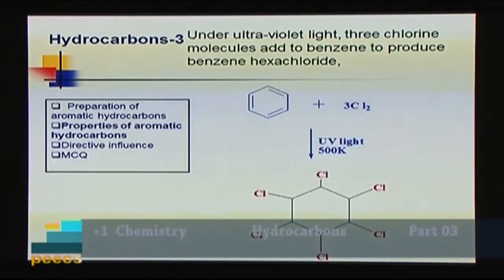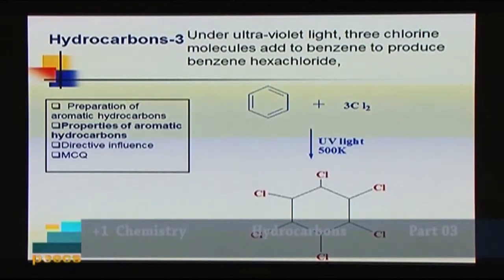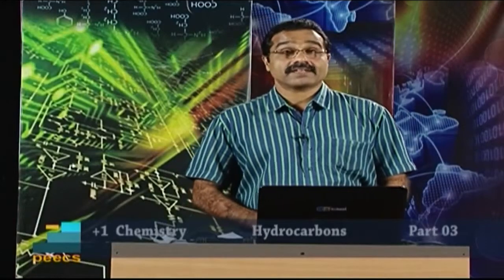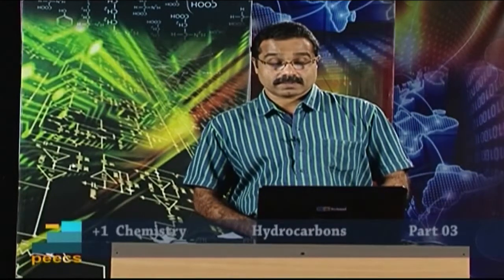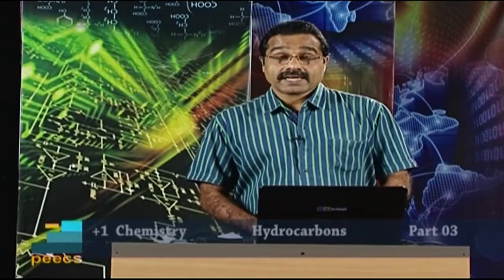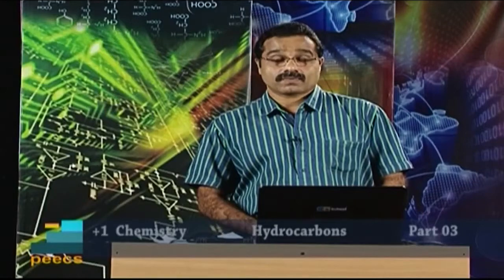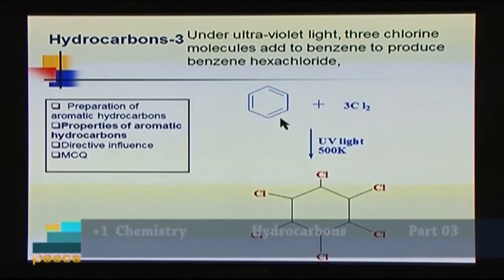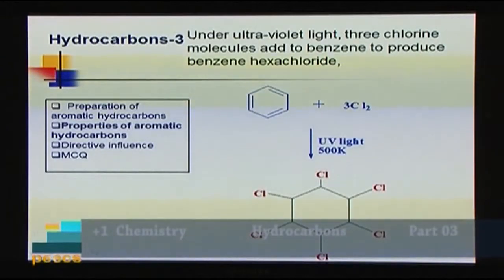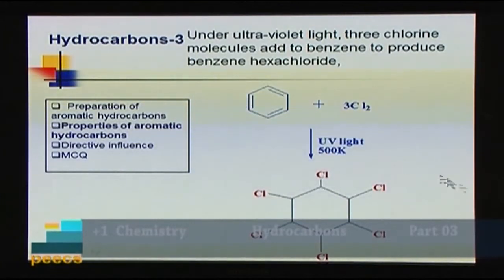When benzene reacts with chlorine in the presence of a Lewis acid catalyst, the reaction is electrophilic substitution — hydrogen is replaced by halogen to give chlorobenzene. But when benzene reacts with chlorine in the presence of ultraviolet light, the reaction is an addition reaction. Three molecules of chlorine add to the three double bonds, and the product is benzene hexachloride (BHC), also known as gammexane, which is used as an insecticide.